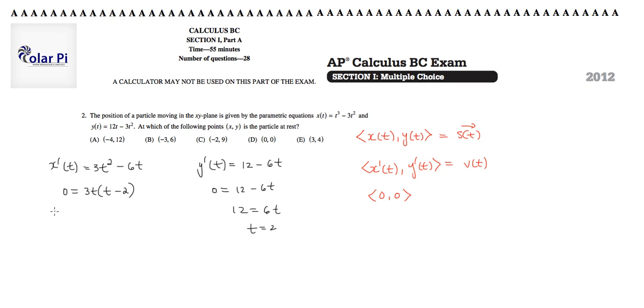And here I get, from 3t equals zero, I get t equals zero, and then from t minus 2 equals zero, I get t equals 2. So I see that this is redundant, and we know that the particle was at rest at the beginning, which is at t equals zero. So, it must be this t value of 2 that we're after.